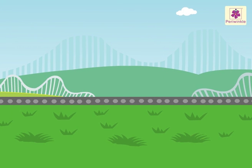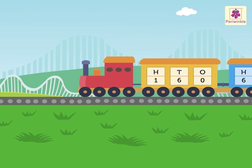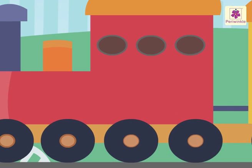Now let us try to read and write the number name of the three-digit number 160 on bogey one. Look, number 1 is placed in the hundreds column, number 6 is placed in the tens column, and number 0 is placed in the ones column. So the number 160 is read and written as one